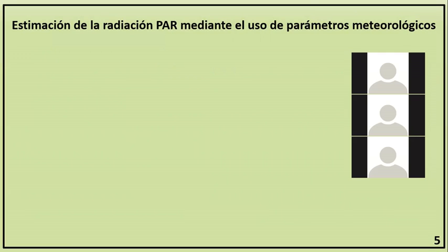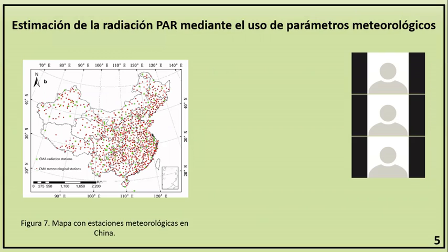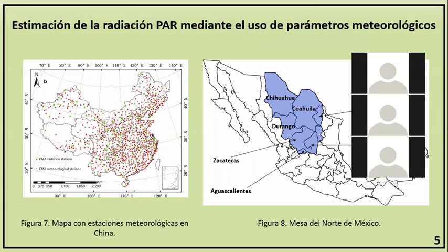Una manera muy común de estimar la radiación PAR en grandes regiones es mediante el desarrollo de modelos empíricos basados en parámetros observables en estaciones meteorológicas, como la radiación solar o la humedad relativa. Una gran parte de los modelos encontrados en la literatura son desarrollados en China, específicamente en regiones con clima árido y semiárido. Esto hace que dichos modelos sean ideales para regiones con características climatológicas similares, como la Mesa del Norte de México, que es una región principalmente árida con grandes planícies y gran actividad agrícola.